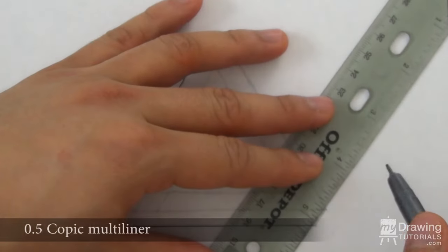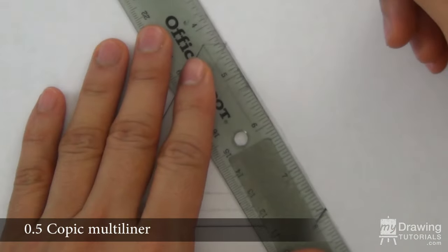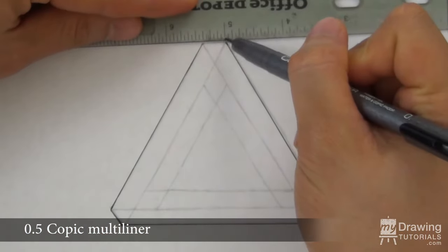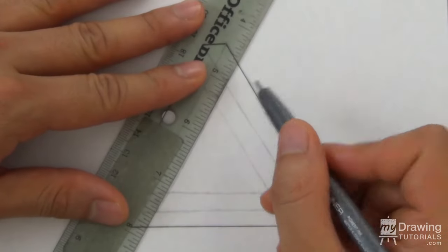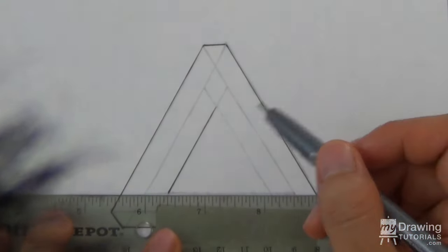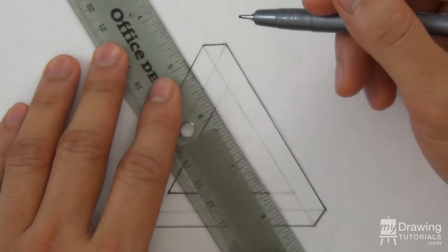I'm going to be using a 0.5 Copic multi-liner pen, and I'll provide the link to all the materials in the description. The ink on these pens takes a few seconds to dry, so be careful not to smudge them when you're drawing.